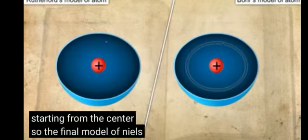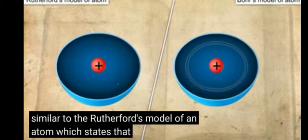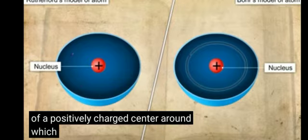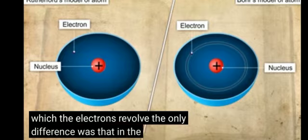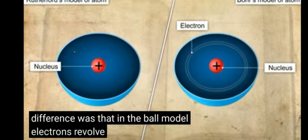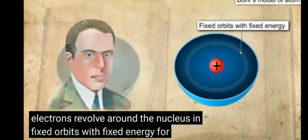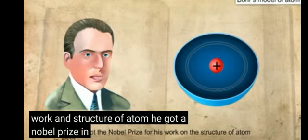So, the final model of Niels Bohr was similar to Rutherford's model of an atom. It states that an atom consists of a positively charged center around which the electrons revolve. The only difference was that in Bohr's model, electrons revolve around the nucleus in fixed orbits with fixed energy. For his work on the structure of the atom, he received a Nobel Prize in 1922.